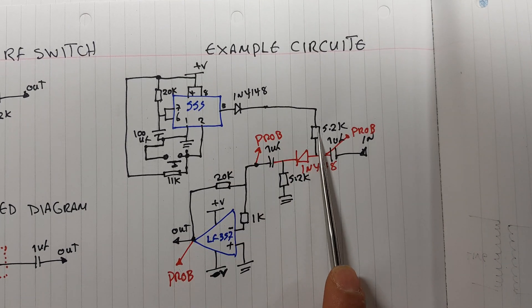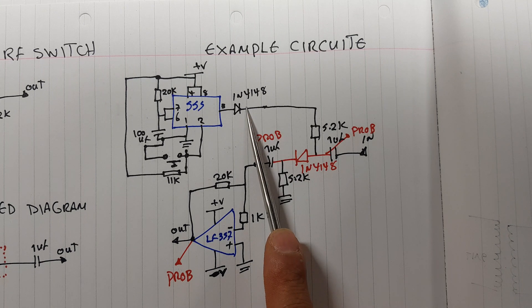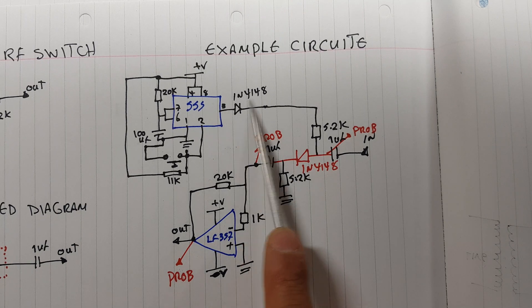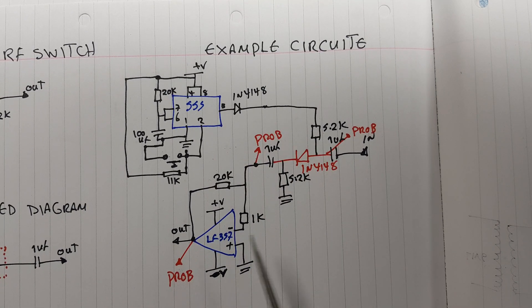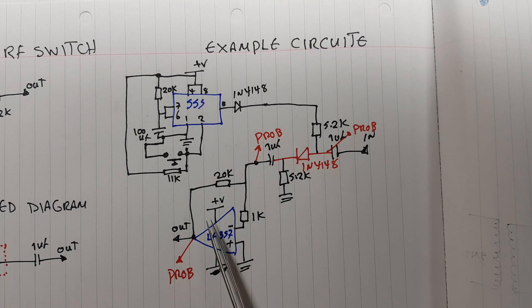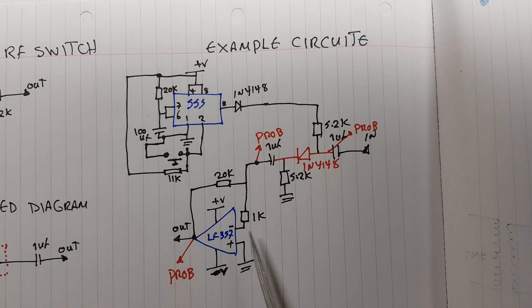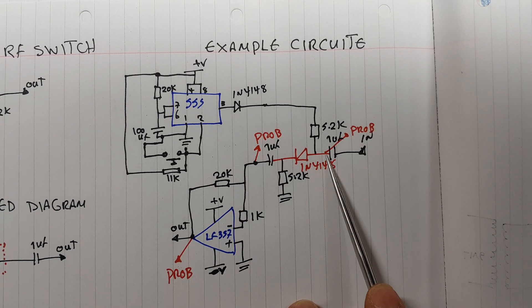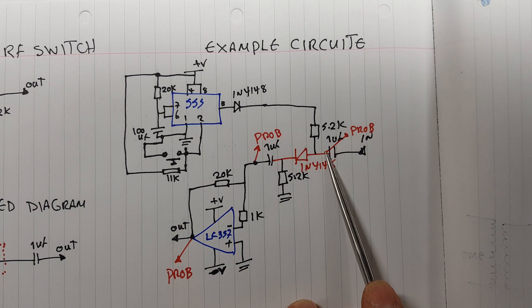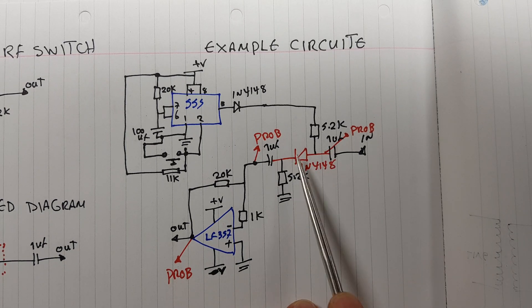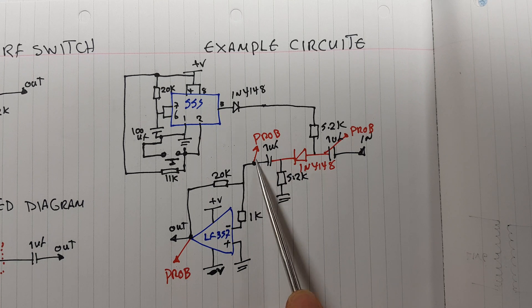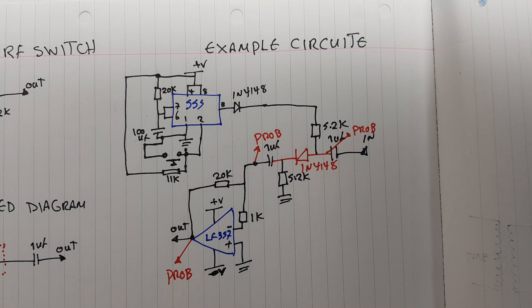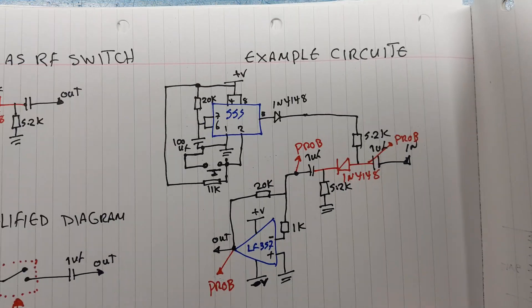The 1N4148 diode here is biased by the output of the 555. As you can see here, with a 5.2k resistor and a switching diode on the output so we don't get anything going back into the 555 in case things go wrong. We've got an LF357 set as an inverting amplifier with a gain of about 20, 21, 22. We're going to probe the input right after the first AC coupled capacitor, then look at the output of the diode and the output of the amplifier to see what kind of signals we get.